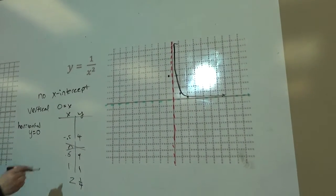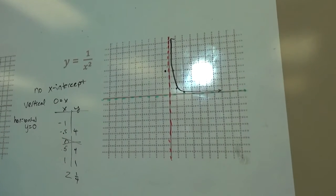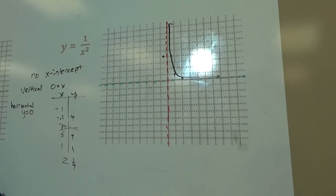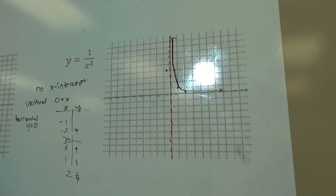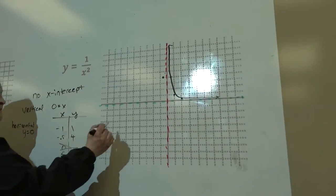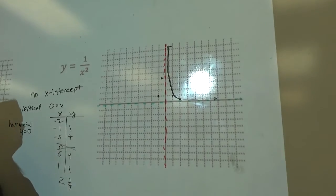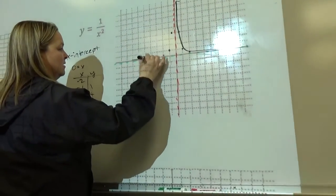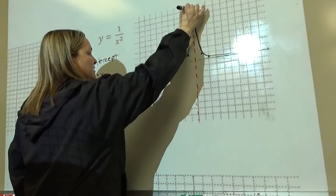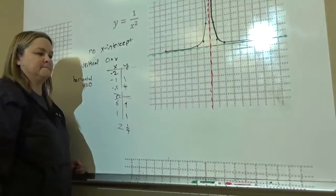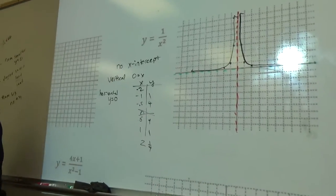I'll try negative one. At negative one, you get one. Negative two, one-fourth. So the graph looks like this. That's good on that one.